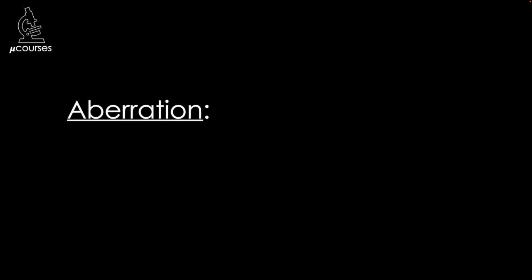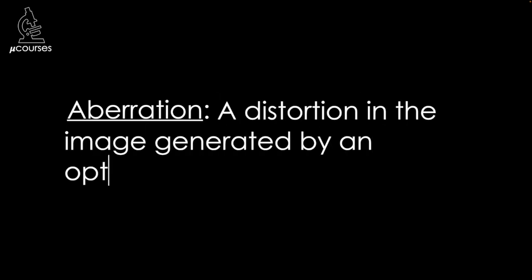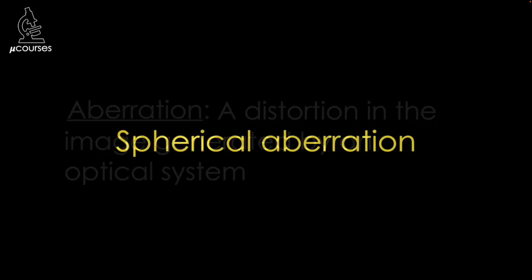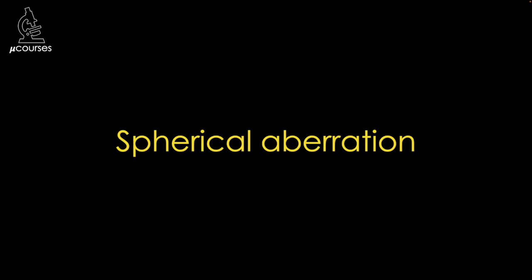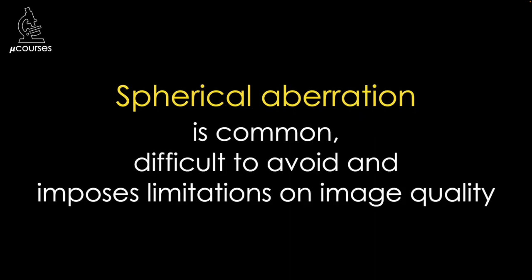An aberration is a distortion in the image, with that distortion being generated by the optical system. Spherical aberration is one of several types of aberrations that can be found in microscopy images. It is common, difficult to avoid, and imposes limitations on image quality. I'm going to go over several sources of spherical aberration, but I think it's helpful to start with the phenotype — what spherical aberration looks like and what it does to your images.